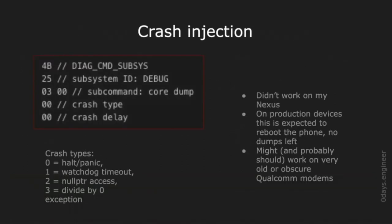The crash injection DIAC packet enables injecting a crash into the baseband, at least in theory. In my case it did not work — it simply did not reach the baseband. Normally on a production device I would expect it to just reset the baseband without providing a crash dump. I suppose it still works on some other devices, so it is worth checking. There are a few types of crashes you can request in this way.